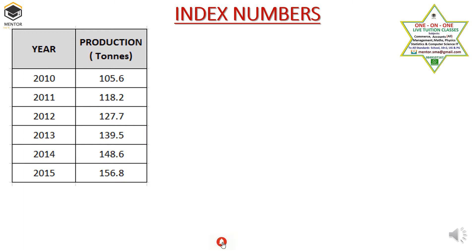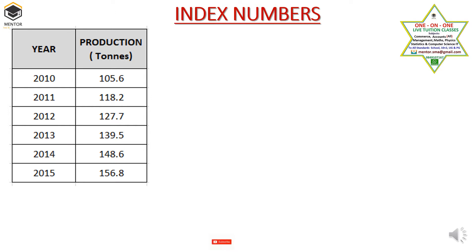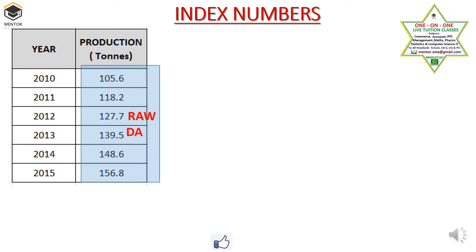Let's consider if you have this data — year-wise data and production. In production you have some values from 105.6 with respect to the year 2010, and so on till 2015, where I have 156.8. All these figures are on the screen. So if I ask you what sort of changes are there from year to year, by seeing this raw data, you won't be getting exactly what this data is telling — how much percentage the production is increasing or decreasing year-wise.